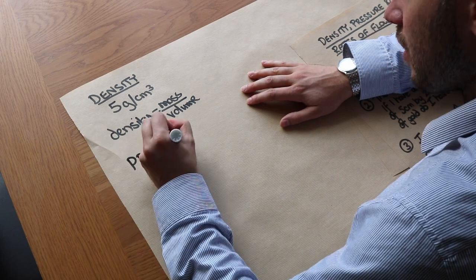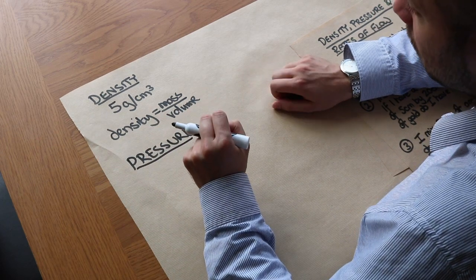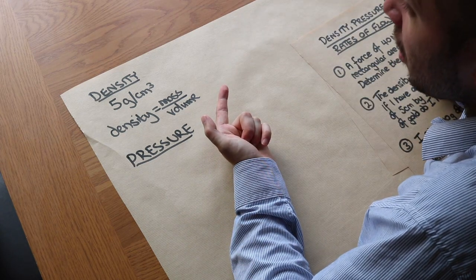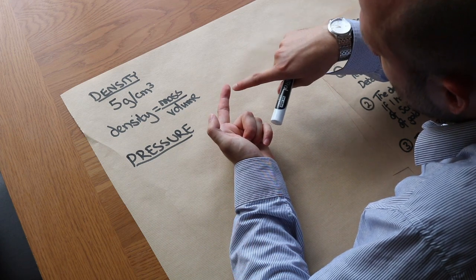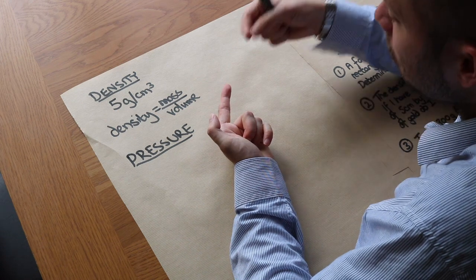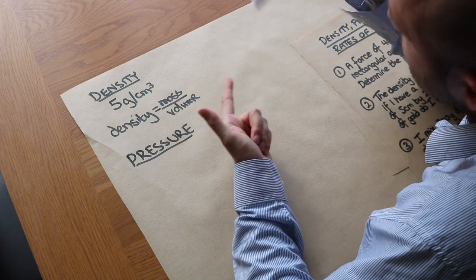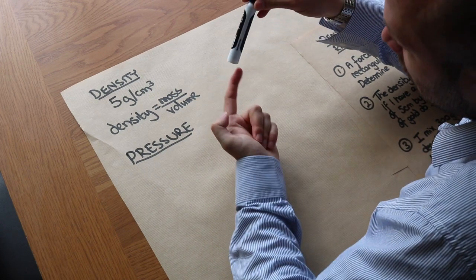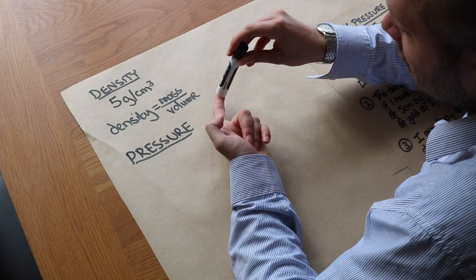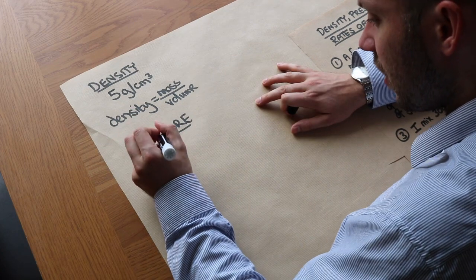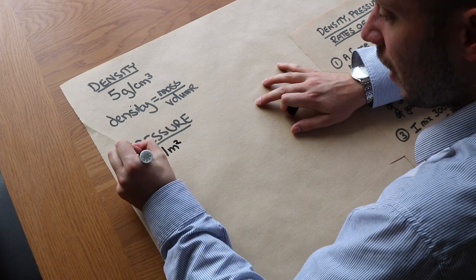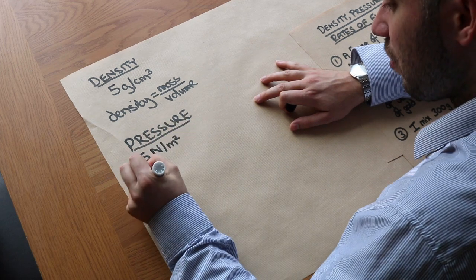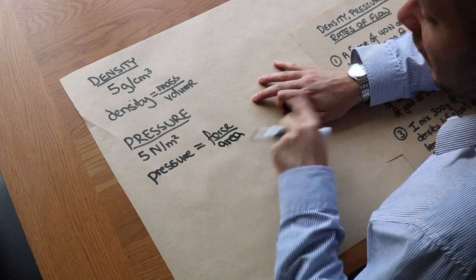Pressure is the amount of force applied per unit area. For example, if you put a pin on your finger and push down, it hurts because the force is applied over a very small area — the tip of the pin — so the pressure is very high. But pressing a pen with the same force doesn't hurt, because the force is spread over a larger area, so pressure is lower. The unit of pressure is newtons per metre squared.